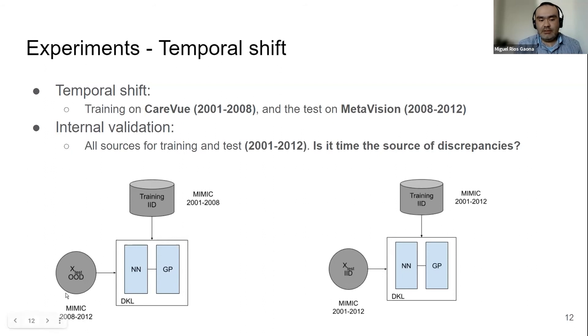Here we see on the left, the temporal shift case—the out-of-distribution is going to be 2008 to 2012, and it's going to be trained from 2001 to 2008. For the internal validation, all the sources are going to be included, so it's in distribution.